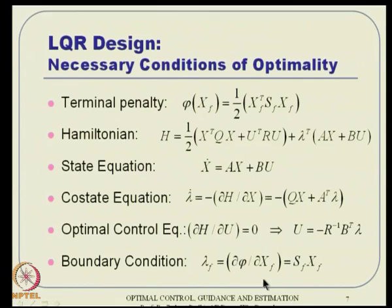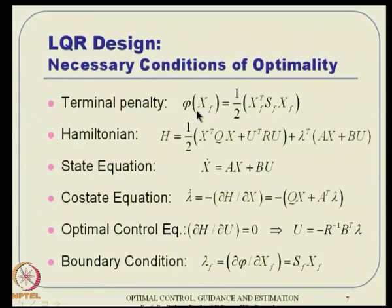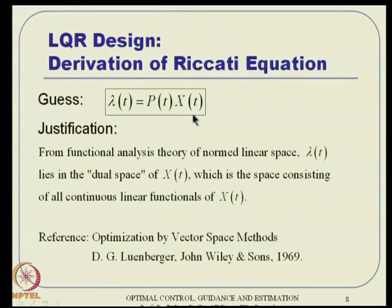Here is the key trick in this problem. Lambda(t) is guessed as some time-varying matrix P(t) times X(t). The engineering justification: lambda_f = S_f X_f, meaning lambda at the final time is a linear function of X_f. So one can guess that at every point in time, lambda is also a linear function of X. Furthermore, since the LQR problem has a unique solution, if you are able to assume lambda(t) = P(t)X(t) and obtain a solution, that must be the only solution by uniqueness.